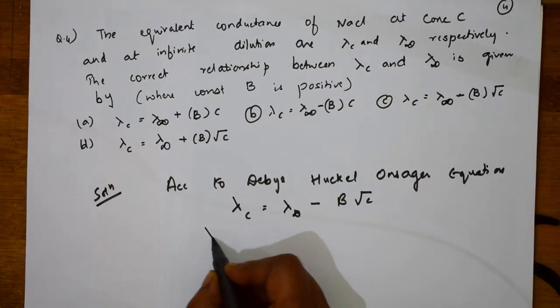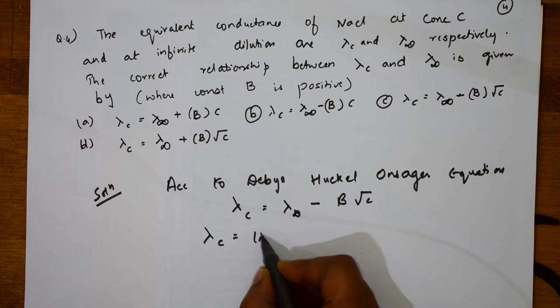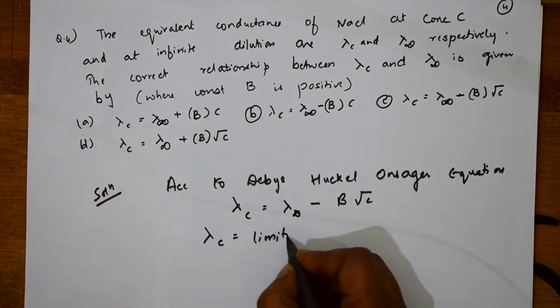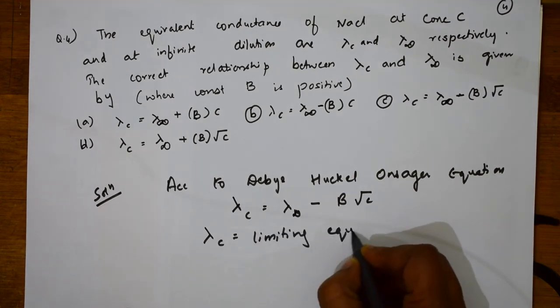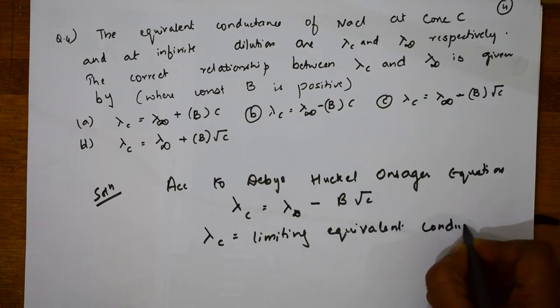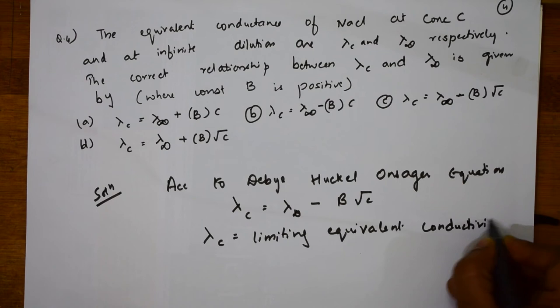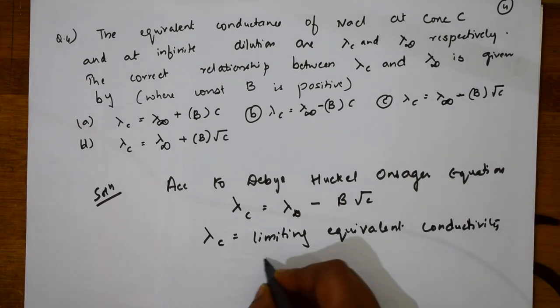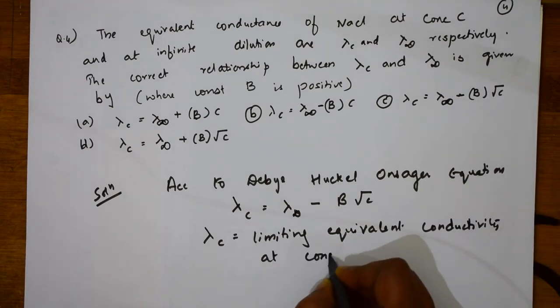Let us name what it is. What is lambda C? This one is limiting equivalent conductivity at concentration C, at concentration C.